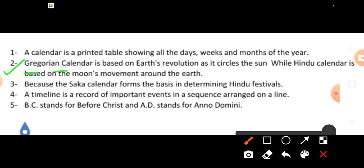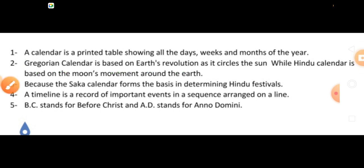The Gregorian calendar is based on Earth's revolution as it circles the sun, while the Hindu calendar is based on the moon's movement around the Earth.